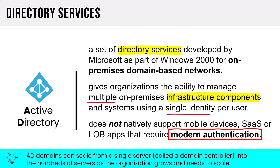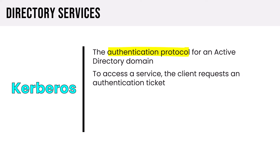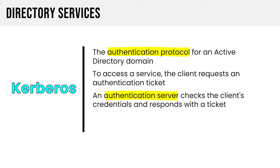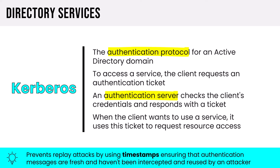Domain controllers hold a copy of the directory and can authenticate users; they can be placed throughout branch offices so users can authenticate even without connectivity to the main office. Kerberos is the authentication protocol for Active Directory — the client requests an authentication ticket, the authentication server checks credentials and responds with a ticket, and the client presents that ticket to access a service. Importantly, Kerberos prevents replay attacks by using timestamps to ensure authentication messages are fresh and haven't been intercepted and reused by an attacker.